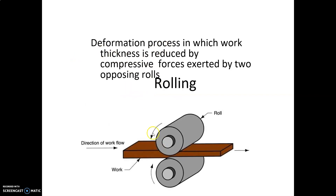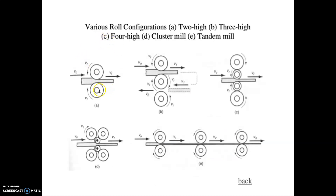In the rolling process, the material is fed between two rollers. The thickness of the material is reduced as it comes out of the roller — deformation reduces thickness by compressive forces exerted by two opposing rolls. Types of rolling mills include: two-high rolling mill, three-high rolling mill, four-high rolling mill, cluster rolling mill, and tandem rolling mill.